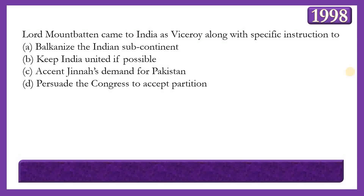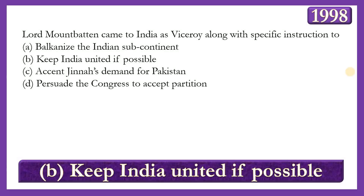Next question: Lord Mountbatten came to India as Viceroy with the specific instruction to do what? Options: Balkanize the Indian subcontinent; keep India united if possible; accept Jinnah's demand for Pakistan; or persuade Congress to accept partition. The answer is option B — to keep India united if possible. He came with specific instruction to oversee the transition of British India to independence no later than 30th June 1948.